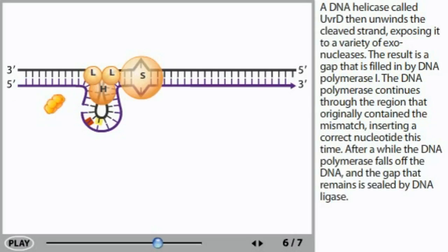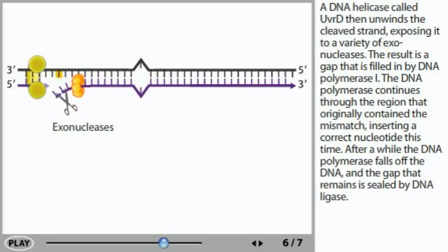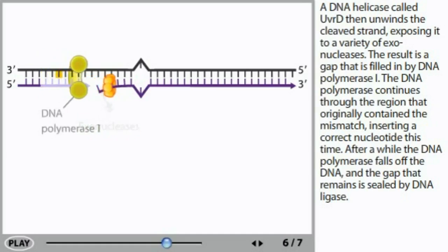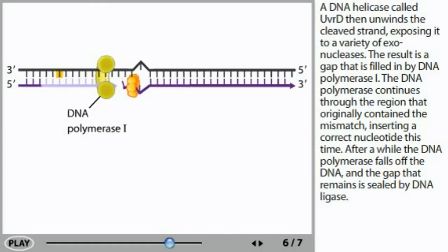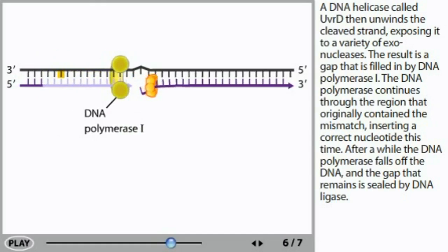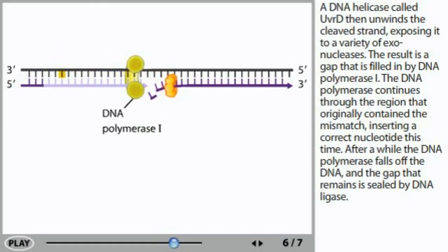A DNA helicase called UvrD then unwinds the cleaved strand, exposing it to a variety of exonucleases. The result is a gap that is filled in by DNA polymerase I. The DNA polymerase continues through the region that originally contained the mismatch, inserting a correct nucleotide this time.